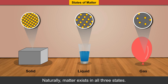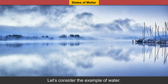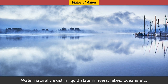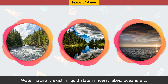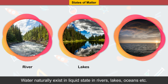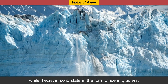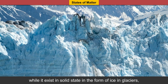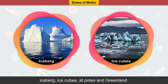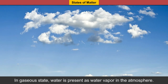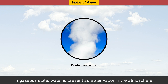Naturally, matter exists in all three states. Let's consider the example of water. Water naturally exists in liquid state, in rivers, lakes, oceans, etc. While it exists in solid state in the form of ice, in glaciers, icebergs, ice cubes, at poles and Greenland. In gaseous state, water is present as water vapor in the atmosphere.